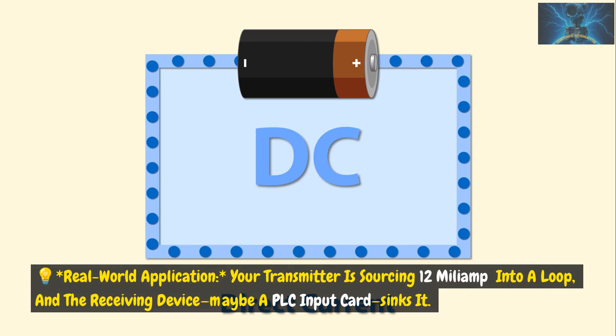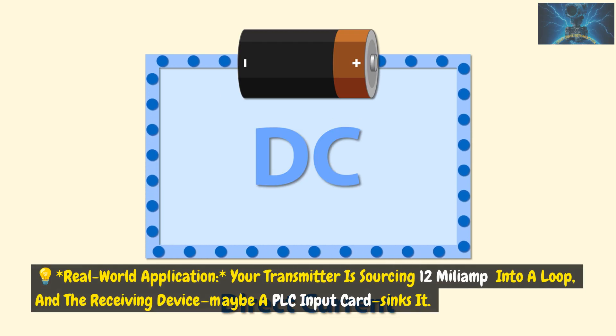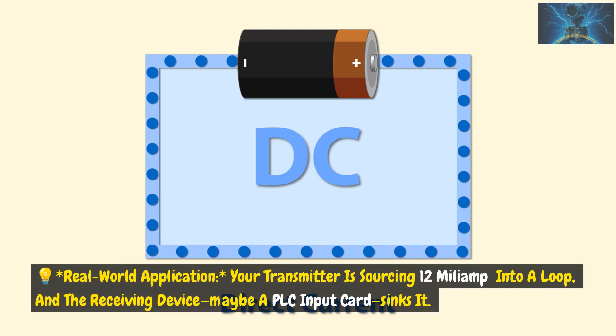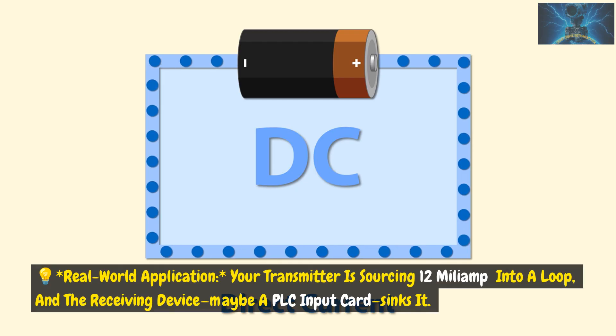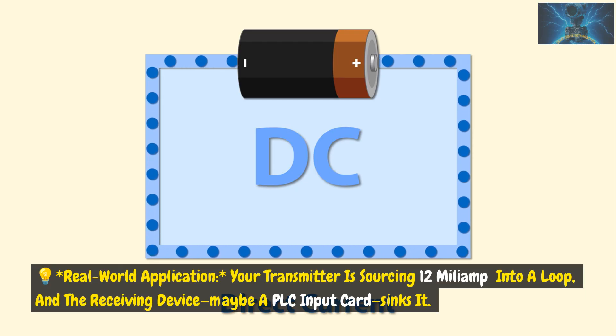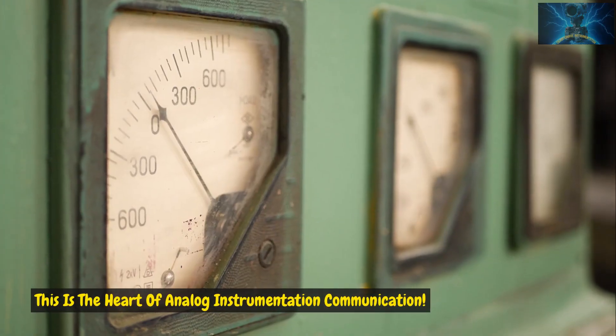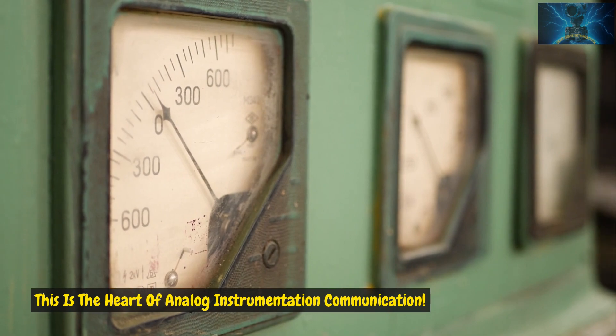Real-world application: your transmitter is sourcing 12 milliamps into a loop, and the receiving device — maybe a PLC input card — sinks it. This is the heart of analog instrumentation communication.